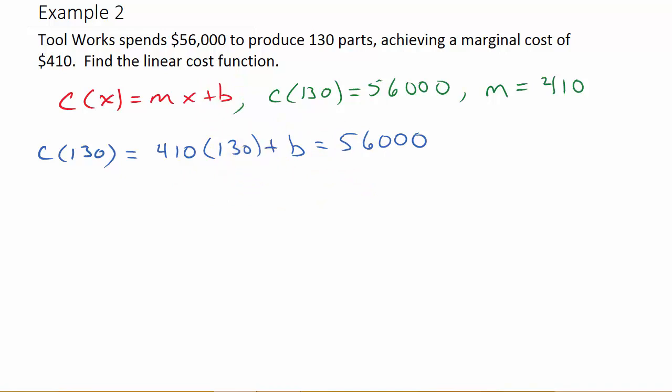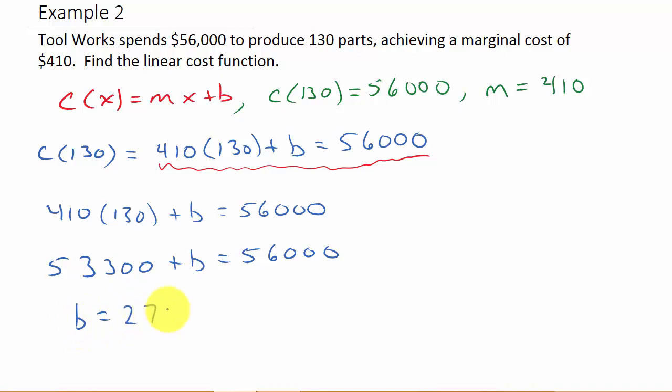So, let's go ahead, if you look at this, you can see we have this equation here that we can solve for b. So I've got 410 times 130 plus b is equal to 56,000. 410 times 130, that is 53,300 plus b equals 56,000. And so, if I subtract 53,300 to both sides, I get b is equal to 2,700.